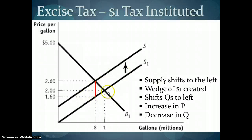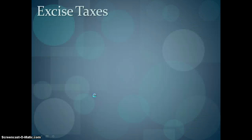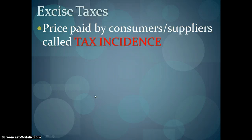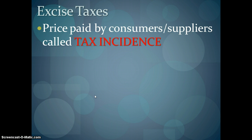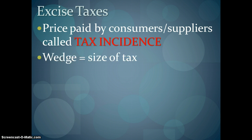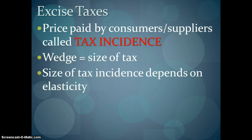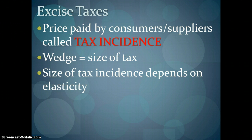Efficiency is lost when you think about the fact that without government intervention, our equilibrium is at a million gallons of gasoline, but now we're at 800,000 gallons. There's an entire segment of trades that would have occurred which will not happen now — we're selling less at a higher price, creating inefficiencies. Who pays the tax is interesting. The price paid by consumers or suppliers is called the tax incidence — the burden of the tax. It turns out the burden is paid by both consumers and suppliers, and how it splits depends on the elasticity of demand and supply.